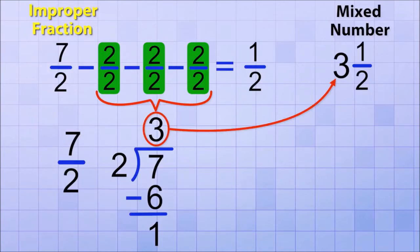And here's the really cool part. The remainder of the division tells us what the leftover fraction will be. The remainder is the numerator, the top number, of the leftover fraction. In this case, since the remainder is 1, we'll have 1 over 2 left over in our mixed number.